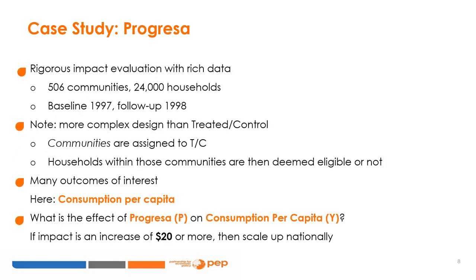One of the reasons PROGRESSA was so popular in terms of studies was that it was based on rigorous impact evaluation with very rich data built into the program's deployment. The evaluation was based on a sample of 506 communities with 24,000 households. The baseline data collection was in 1997, with a follow-up in 1998. This was a more complex design than a simple treatment and control, as we will see in the following slides.